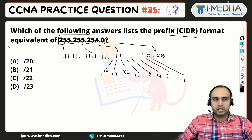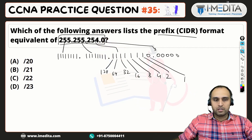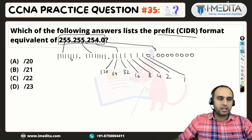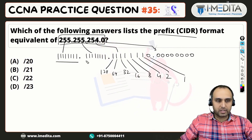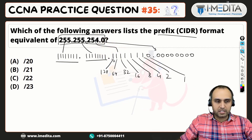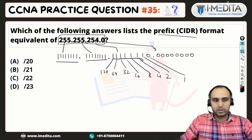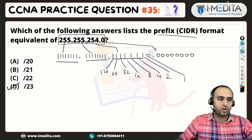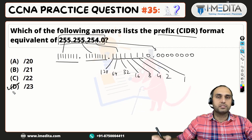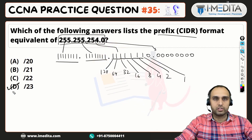Finally, our last octet is all 0s — that will be 8 zeros. And if we add up the slash: 8 from the first octet, plus 8 is 16, then 17, 18, 19, 20, 21, 22, 23. So slash 23 — option D is the right answer for this question.